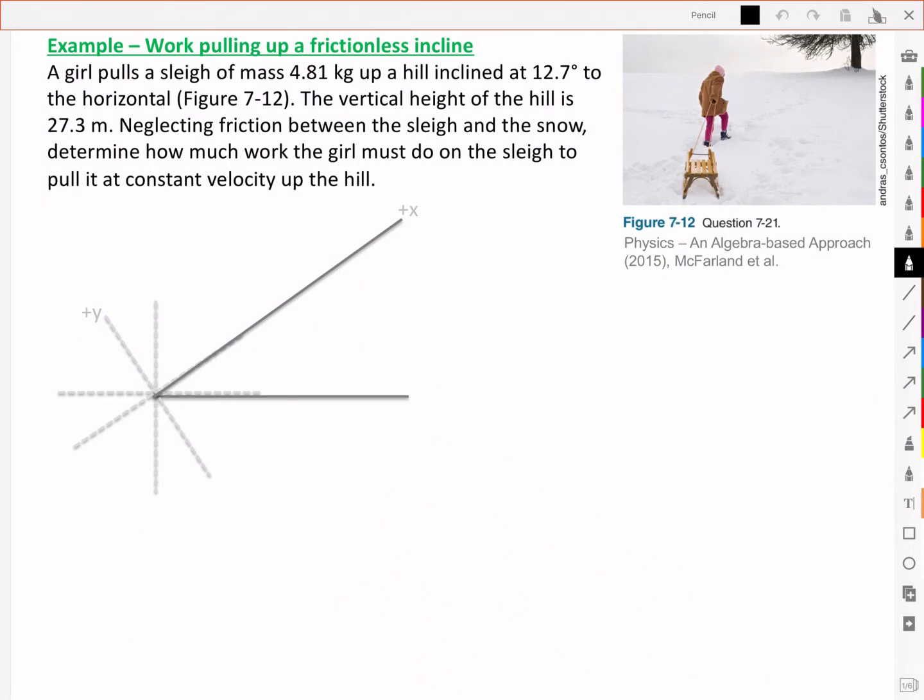Here we'll look at the example of the work done when pulling an object up a frictionless incline. A girl pulls a sleigh of mass 4.81 kg up a hill inclined at 12.7 degrees to the horizontal. The vertical height of the hill is 27.3 meters. Neglecting friction between the sleigh and the snow, determine how much work the girl must do on the sleigh to pull it at a constant velocity up the hill.